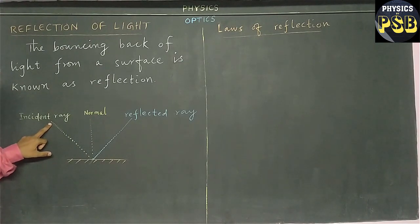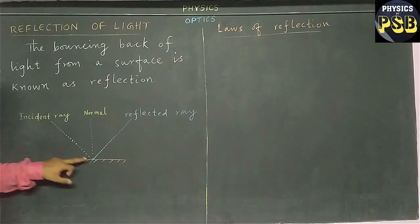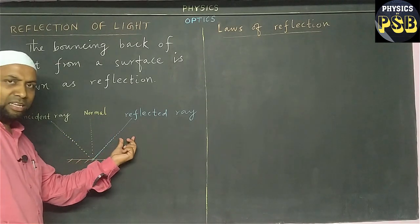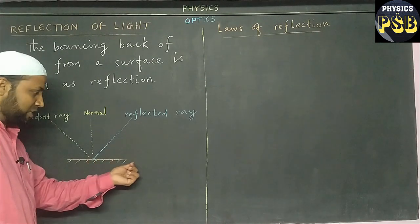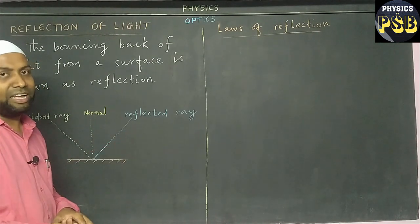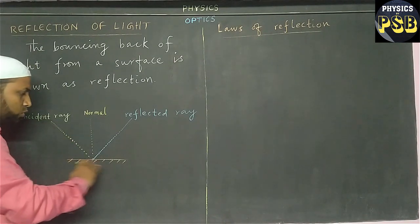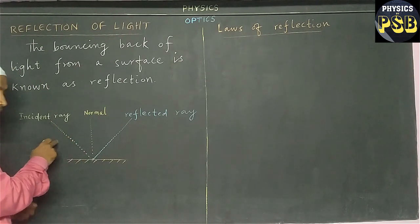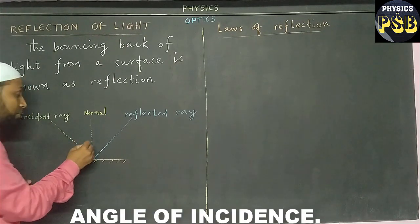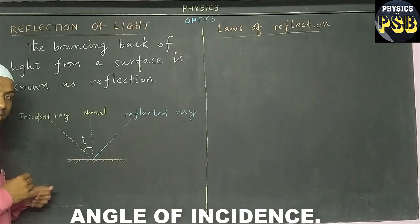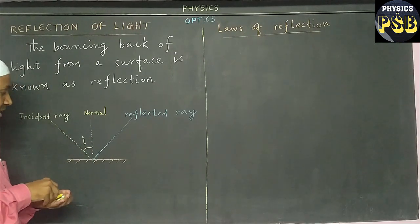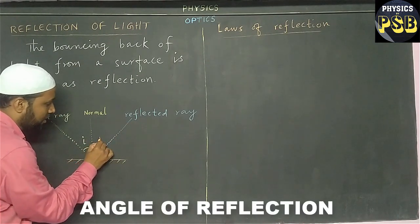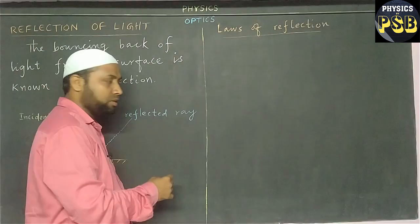I repeat, a ray of light which starts from a source and falls on the reflecting surface is called the incident ray. And a ray of light which gets reflected from the reflecting surface is known as reflected ray. And the line which is perpendicular to the reflecting surface is known as normal. The angle between normal and incident ray is known as incident angle, which is denoted by letter I. And the angle between normal and reflected ray is known as reflecting angle, represented by letter R.